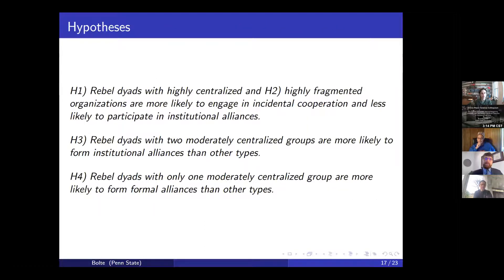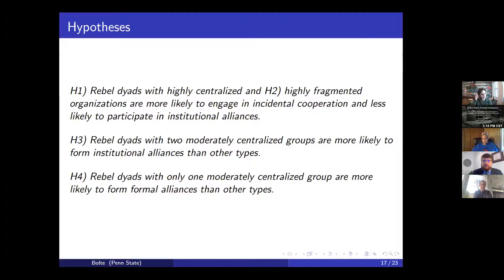From this I can derive a few hypotheses. First, highly centralized and highly fragmented groups are going to be less likely to participate in institutional alliances and more likely to participate in lower-cost incidental cooperation. Second, dyads of moderately centralized groups are going to be more likely to form institutional-type provisions. Third, mixed dyads — one moderately centralized group with one centralized or fragmented group — should be more likely to form formal alliances, as formal alliances might serve as a stepping stone to deeper cooperation where there's some credibility but not enough for groups to accept significant autonomy costs.